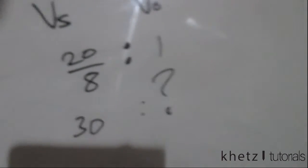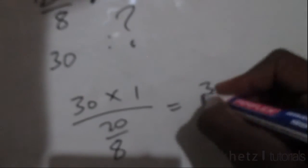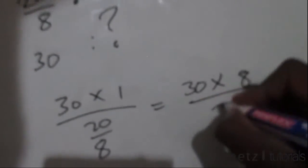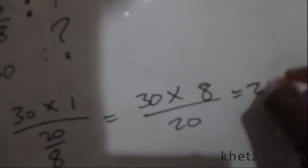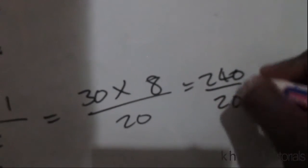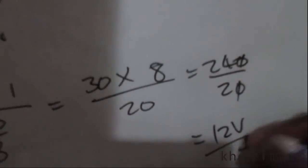We're going to do proportion and say 30 multiplied by 1 divided by 20 over 8. Doing quick math, 30 multiplied by 8 divided by 20, this gives you 240. This is 240 divided by 20, cancel, cancel, and that is 12 volts, which is exactly the same answer using the method which we've been using before of voltage division.